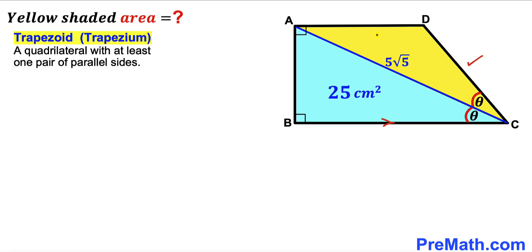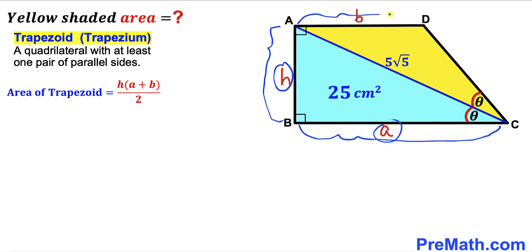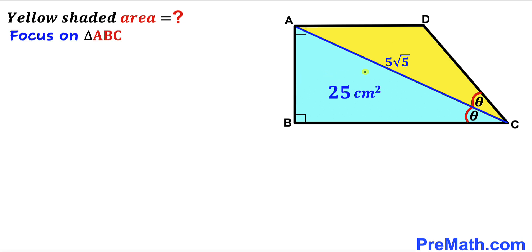Recall the trapezoid area formula: Area = h × (a + b) / 2. In our case, this side is the height h, this side is base a, and this side is base b. Our task is now to find the values of a, b, and h.